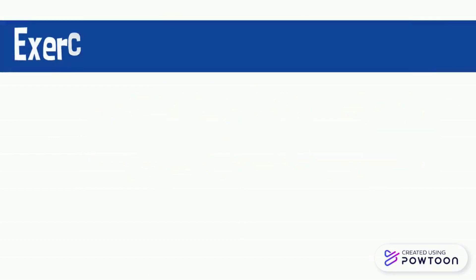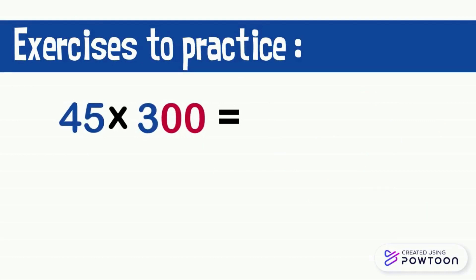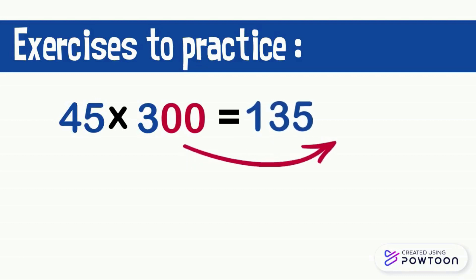Let's practice these exercises. Try to calculate to find the answers. 45 times 300: first, we multiply 45 by 3, which is equal to 135. Then we put two 0s to the right of this number. So 45 times 300 equals 13500.